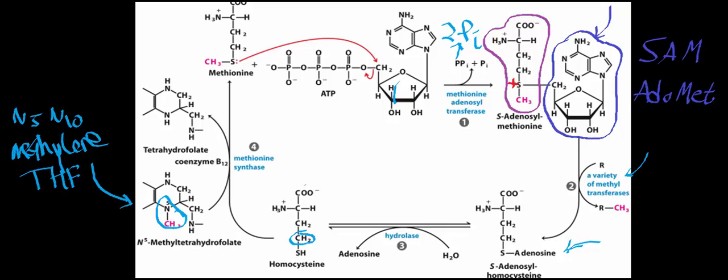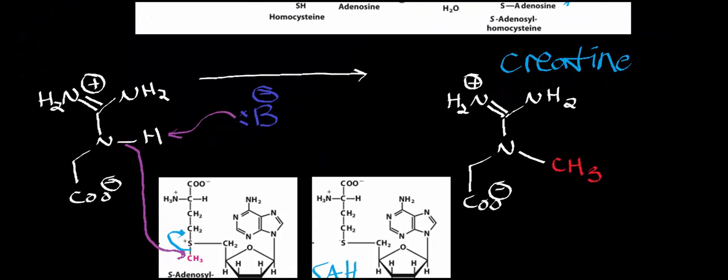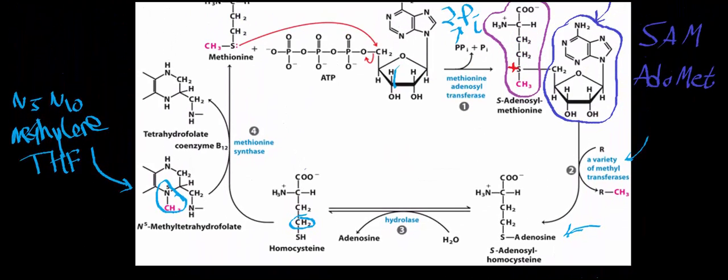Let's do a quick recap of this cycle — the SAM cycle, also called the S-adenosyl methionine cycle. We start with S-adenosyl methionine, which transfers its methyl group to various substrates via enzymatic reactions. We looked at guanidinoacetate methyltransferase, but we could have looked at phenylethanolamine N-methyltransferase for epinephrine biosynthesis, or catechol-O-methyltransferase for dopamine degradation. The naming of methyltransferases gives away that they use SAM, and this gives us a leaving group of S-adenosyl homocysteine.